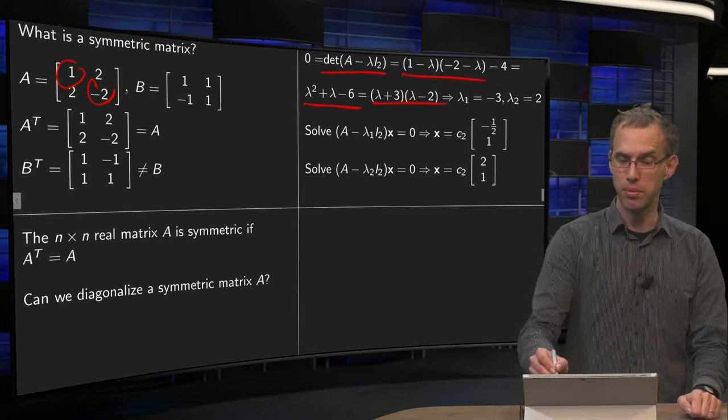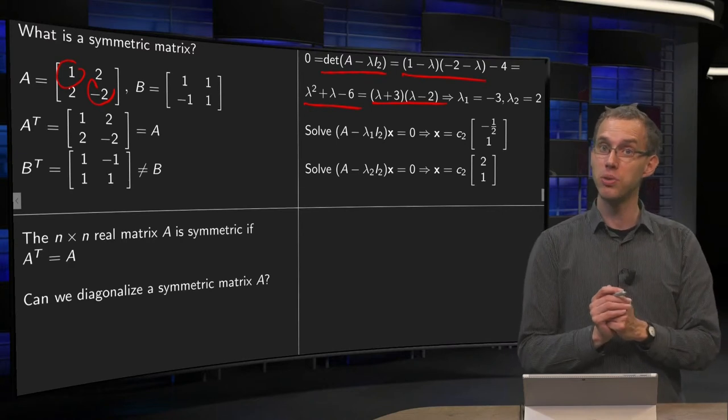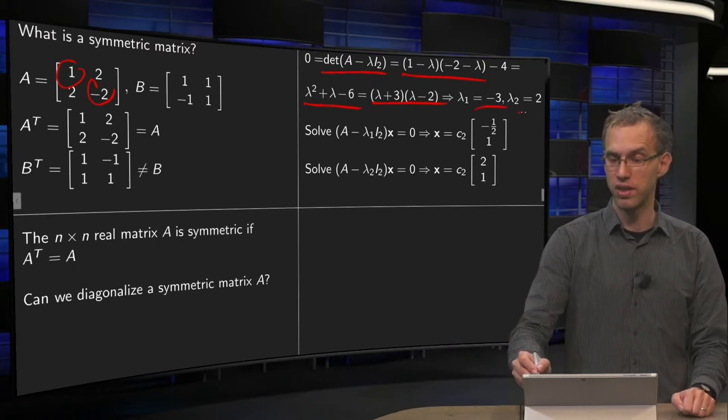We can factorize this as lambda plus 3 times lambda minus 2, so we find our two eigenvalues, minus 3 and 2.